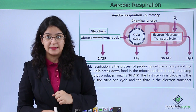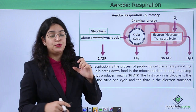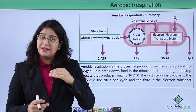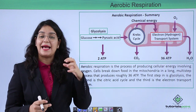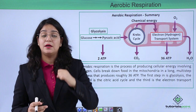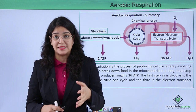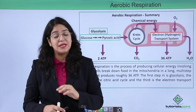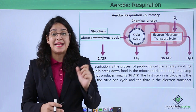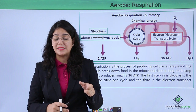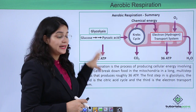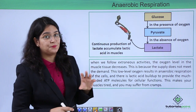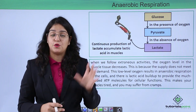But when you exercise continuously, even though your heart and lungs are working very fast, if they are not able to supply a sufficient amount of oxygen and energy to the muscle, then this aerobic condition changes to an anaerobic condition.